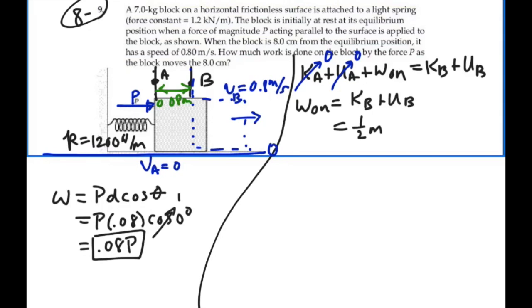This is one-half mass times the velocity of B squared plus one-half KX squared. No MGH because we've already defined our level as being zero level. So this is one-half the mass, which is seven, times the velocity, which is 0.8 squared,